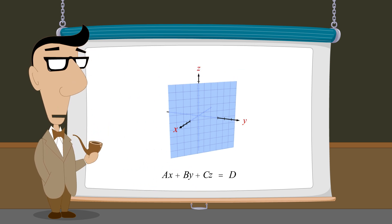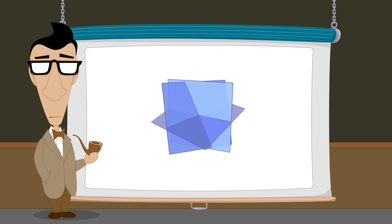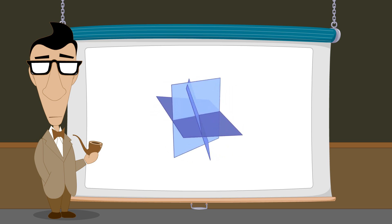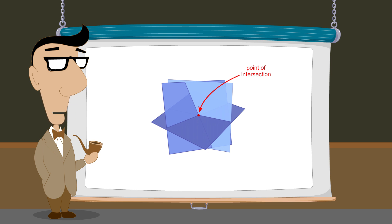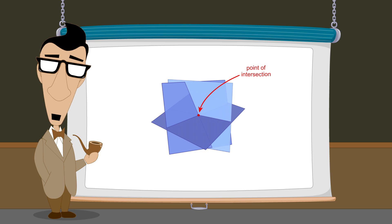Since the graph of a linear equation in three variables is a plane, a system of three linear equations in three variables can be represented as a group of three planes. Each plane may be oriented at any angle and positioned anywhere in space relative to the other planes. Since each plane represents the set of solutions to one of the three equations, any point which simultaneously falls on all three planes corresponds to a solution which simultaneously satisfies all three equations. That point will therefore be a solution of the system.